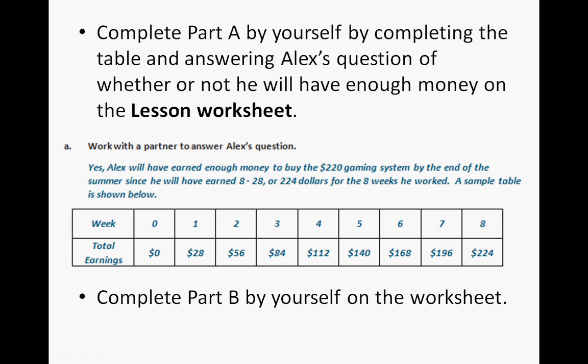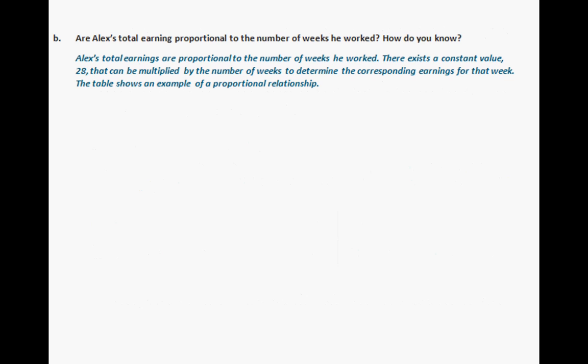Go ahead and complete part B on the worksheet, then continue the video. Your answer should address whether Alex's total earnings are proportional to the number of weeks he worked. The answer is yes — it is proportional. There exists a constant value, or unit rate, of 28 that can be multiplied by the number of weeks to determine the corresponding earnings for that week. The table shows an example of that proportional relationship.